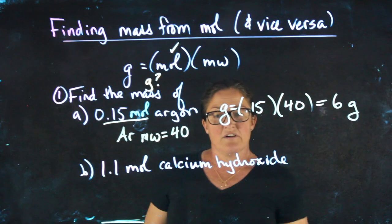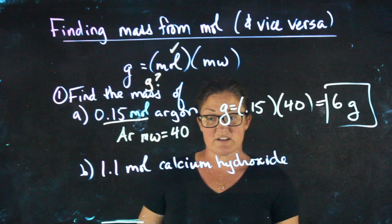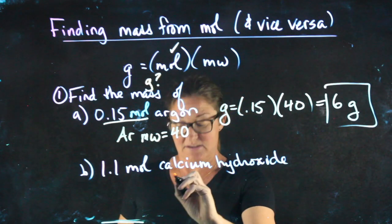The second problem involves a compound instead: 1.1 moles of calcium hydroxide. First, I need to correctly write the formula for calcium hydroxide.